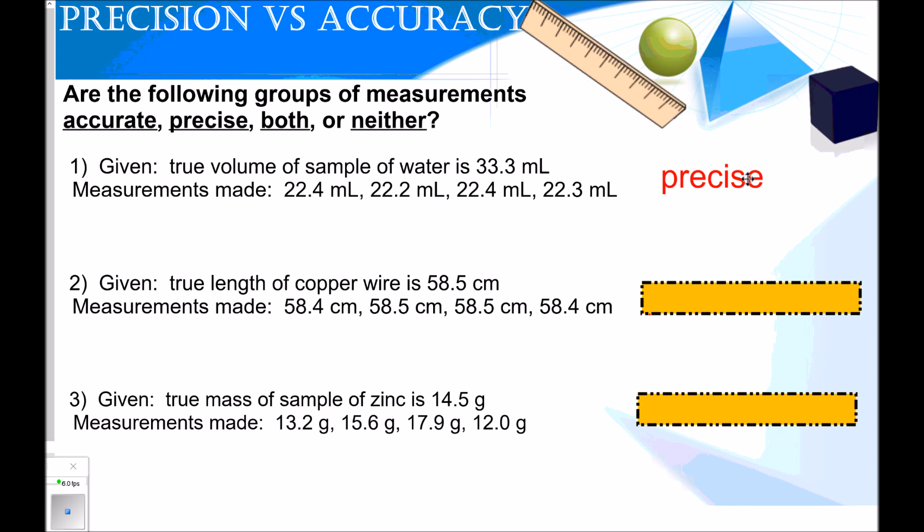Our second example. The true length of copper wire is 58.5 centimeters. The measurements made are 58.4, 58.5, 58.5, 58.4. Go ahead and write down what you think this would be. Hopefully you wrote down precise and accurate. So it is both. They are close to each other, and they are also close to the true value. So they're both precise and accurate.